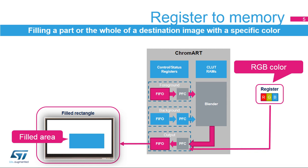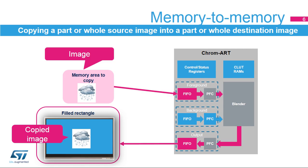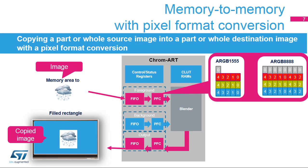Register to memory mode is used to fill a part or whole destination image with a specific color. The color value is set in a register of the output PFC. Memory to memory mode is used to copy a part or whole source image into a part or whole destination image without changing the color format. Memory to memory mode with pixel format conversion is used to do the same type of copy but with a pixel format conversion.